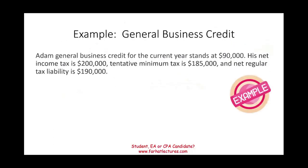Let's work through an example. Assume Adam's general business tax credit for the first year totals $90,000 — adding up credits from various activities: research, work opportunity, investment, and energy saving credits. Can Adam take the full $90,000? No, that credit is limited. His net income tax is $200,000, the tentative minimum tax is $185,000, and the net regular tax liability is $190,000.